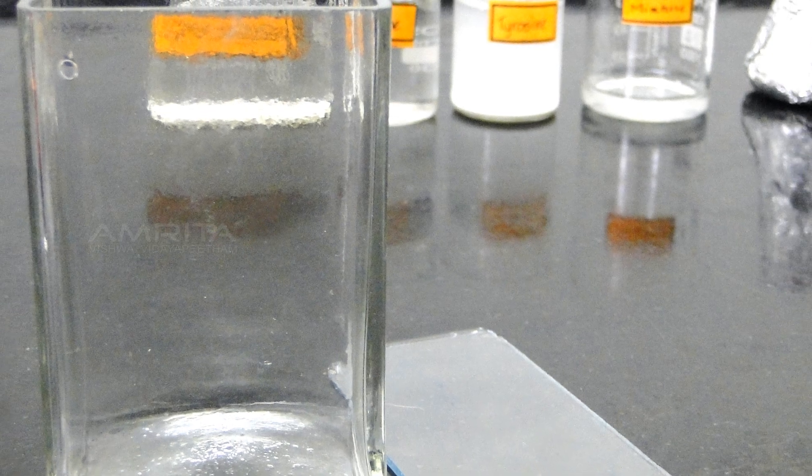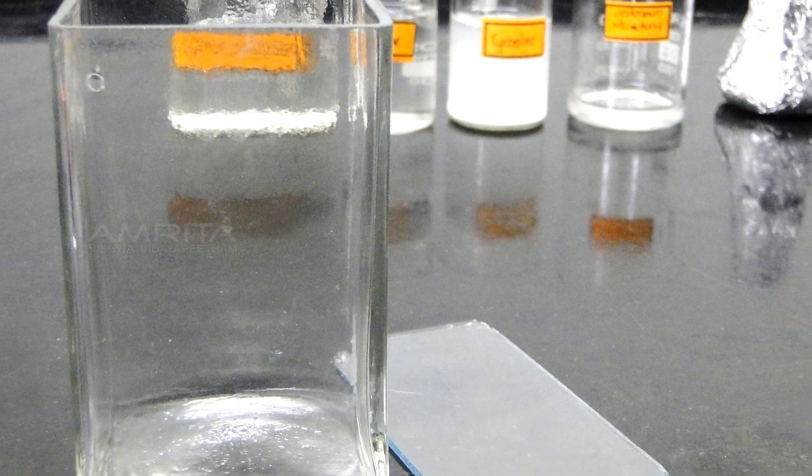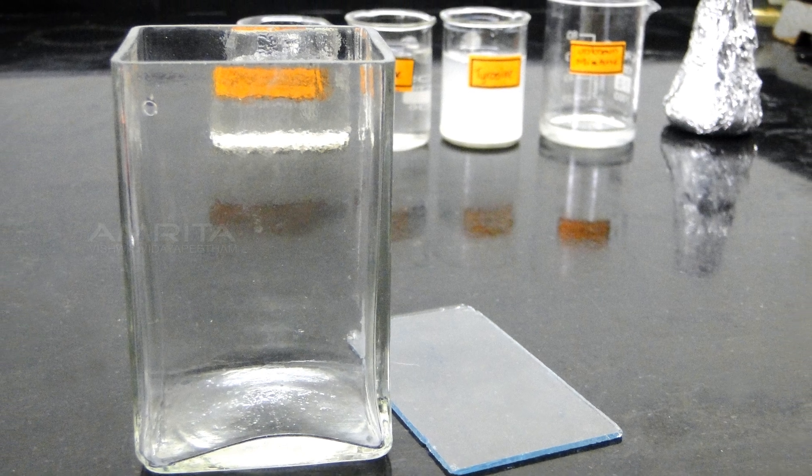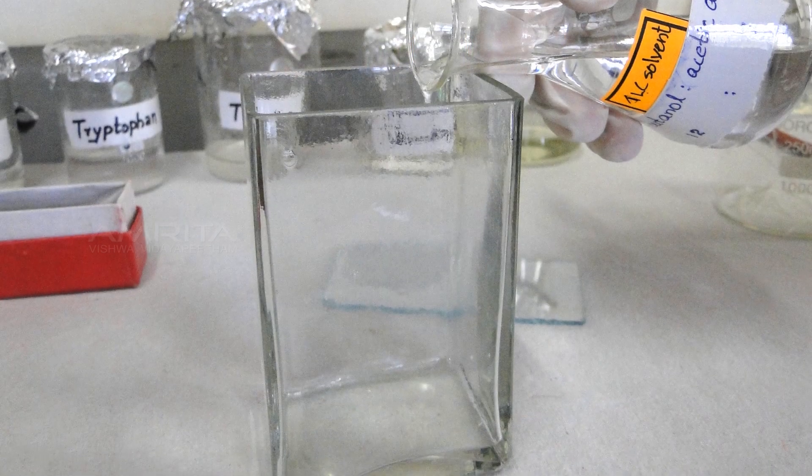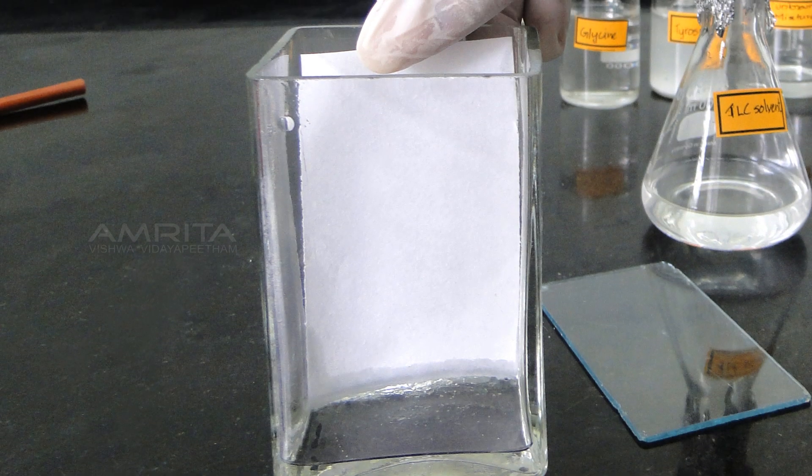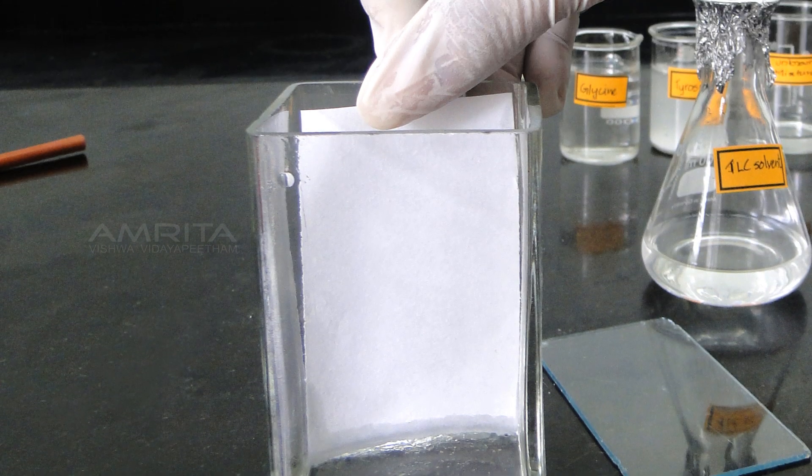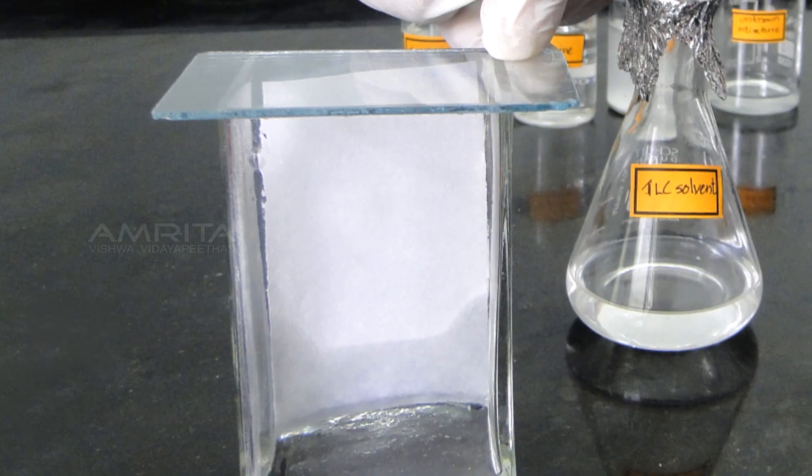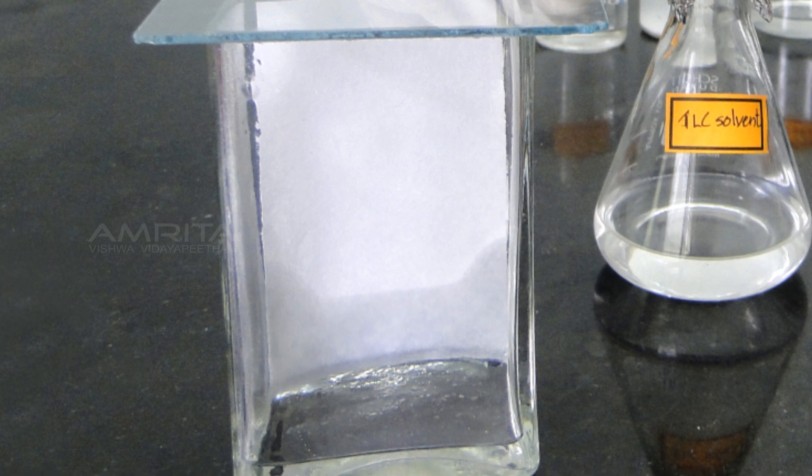Developing a TLC plate requires a developing chamber or vessel called TLC chamber. This can be as simple as a wide mouth jar. The chamber should contain enough solvent to just cover the bottom. It should also contain a piece of filter paper or other absorbent material to saturate the atmosphere with solvent vapors. Finally, it should have a lid or other covering to minimize evaporation.